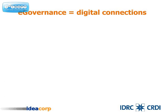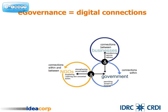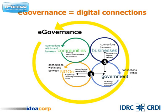According to Professor Richard Heeks, e-governance involves using ICT to enhance connections within government by permitting joined-up thinking, connections between government and NGOs or citizens by strengthening accountability, connections between government and business or citizens by transforming service delivery, connections within and between NGOs by supporting learning and concerted action, and connections within and between communities by building social and economic development.